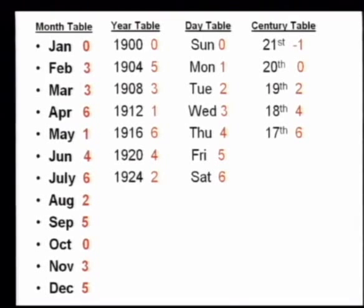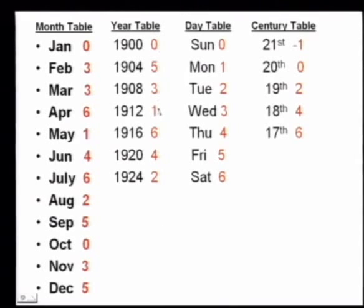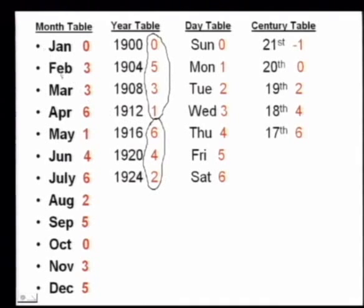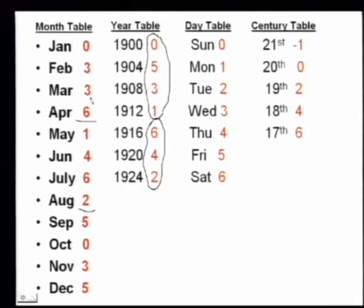Friends, you just have to remember these tables. For the month table: 0, 3, 3, 6, 1, 4, 6, 2, 5, 0, 3, 5 — remember in groups of 4. For the year table: 0, 5, 3, 1, 6, 4, 2 — again in groups of 4. Just repeat the sequences in your mind and the numbers will come automatically.